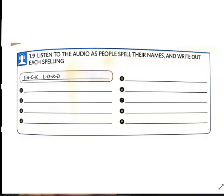Now we're going to do the rest of them, numbers one through nine, and then after we're done I'm going to show you the answers. Number one: my name's Belinda. That's b-e-l-i-n-d-a. Number two: what's your name?